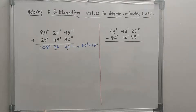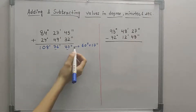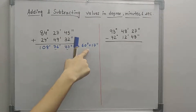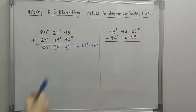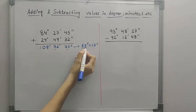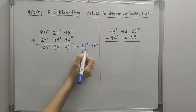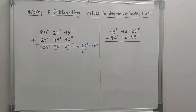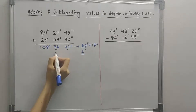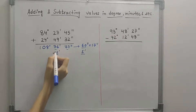As you know, 77 seconds is equal to 60 seconds plus 17 seconds, and 60 seconds is equal to 1 minute. What we are going to do is take this 1 minute right here and add it to 76 minutes.